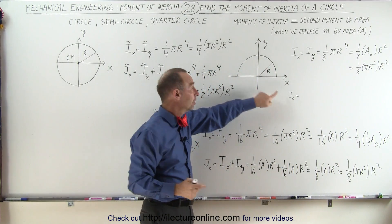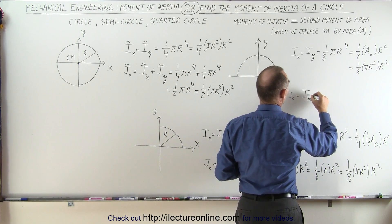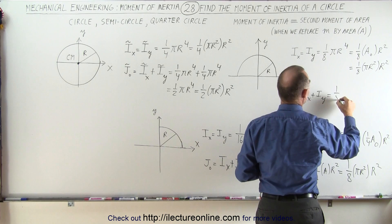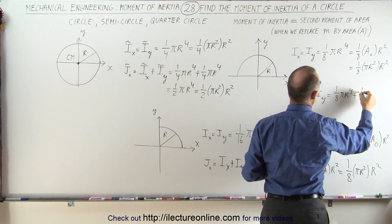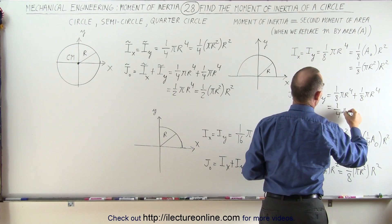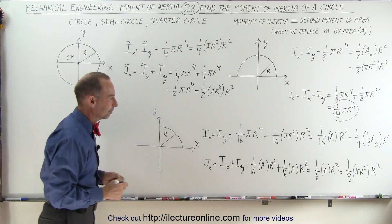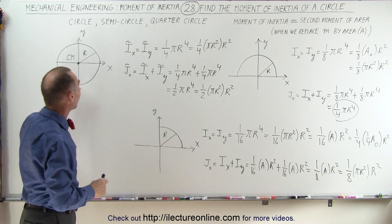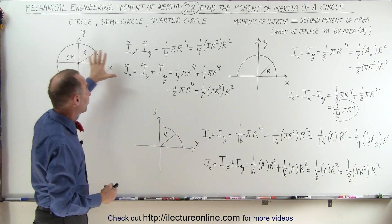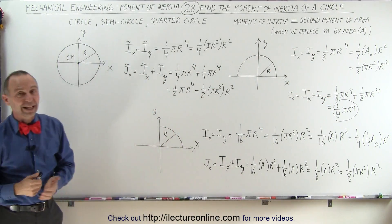To find the moment of inertia of the semicircle relative to the origin, this equals the sum of Ix plus Iy, which is one-eighth pi r to the fourth plus one-eighth pi r to the fourth, equal to one-quarter pi r to the fourth — which is half of what we got for the full circle. So all you need to do is go from a full circle to a half circle to a quarter circle: take all the results for the full circle, divide by two for the half circle, and divide by two again for the quarter circle.